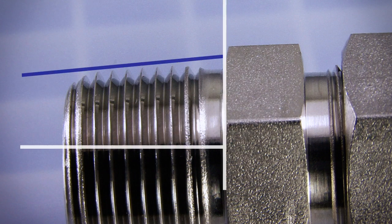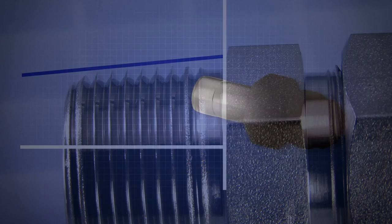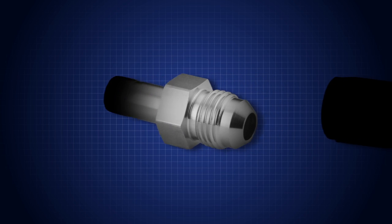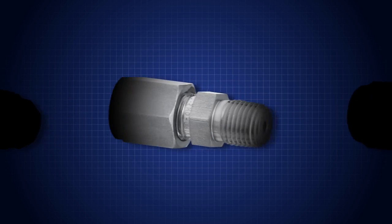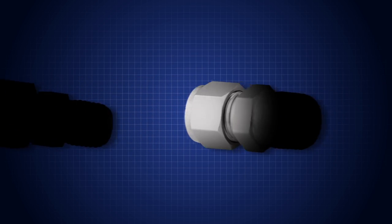Tape should only be used on male tapered pipe threads. Do not use on straight threads such as those used on flared, coned, or tube fitting ends.